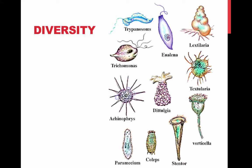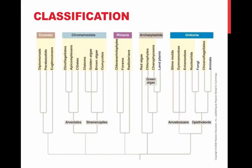Advances in eukaryotic systematics have caused the classification of protists to change significantly. Protists constitute a paraphyletic group, and Protista is no longer a valid kingdom. Protists are eukaryotes, thus they have organelles and are more complex than prokaryotes. Most protists are unicellular, but there are some colonial and multicellular species.